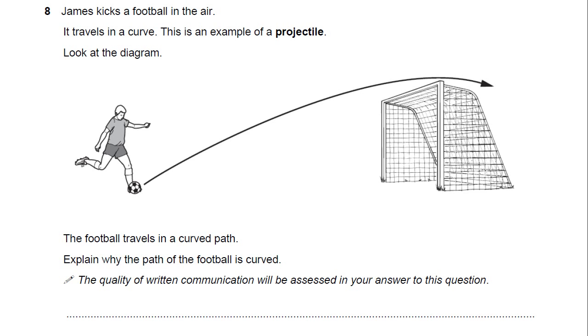This is question 8 in OCR Gateway P5 for the physics syllabus and for the further additional science syllabus. James kicks a football in the air. It travels in a curve. This is an example of a projectile.